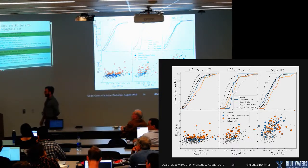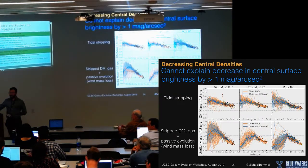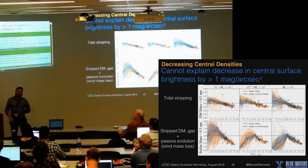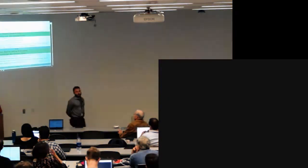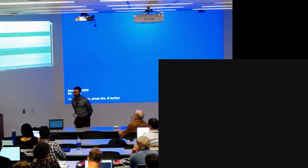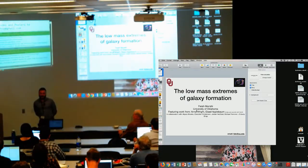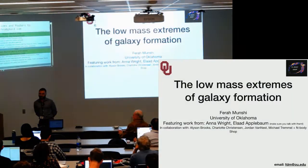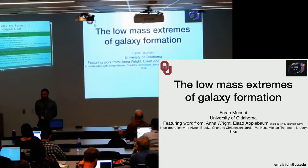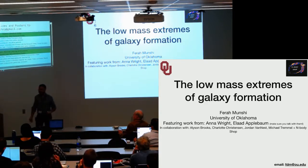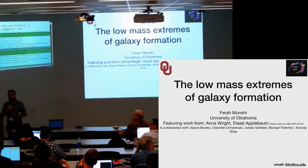Q: In these simulations, either in the field or in the cluster, do you produce a population of compact dwarfs the way they are observed? A: That is one shortcoming — we do not form a lot of dwarfs below a kiloparsec in size, which is a pretty common problem with simulations. It's mostly important for our lowest-mass population of UDGs, where we're over-predicting sizes because we don't have the resolution to really model those very compact stellar distributions. There is a possibility we overpredict at the low-mass end of the UDG population.